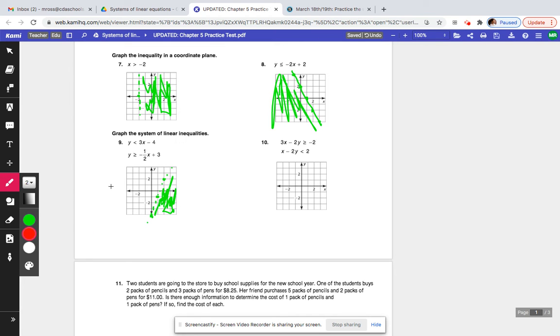Let me change my color. y is greater than or equal to negative 1 half x plus 3. So at plus 3, we have our point. And then it's a negative, so down 1 over 2. Down 1 over 2. And we're going to have everything shaded up. A solid line, sorry. Solid line. And then everything above, because it's greater than. So everything up here. So your common area is right here.